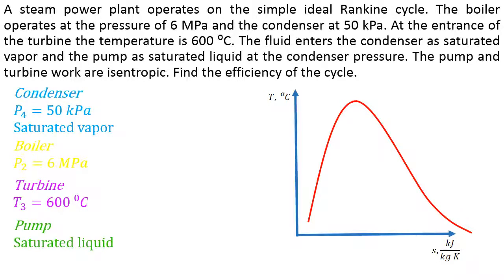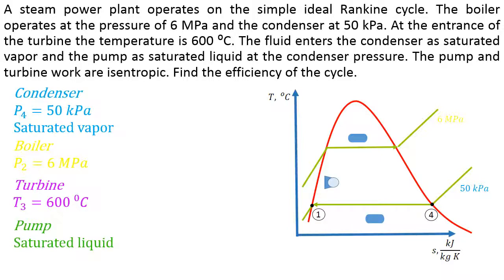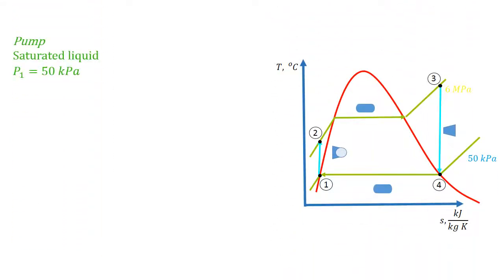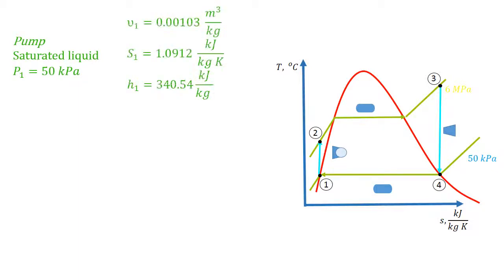Let's start with the condenser. We know that the pressure is 50 kPa and it is saturated vapor. The boiler pressure is 6 MPa. The fluid enters the pump as saturated liquid, and the pump and turbine work are isentropic. As it can be seen, the pressure in the pump is the same as the condenser, and the pressure at the turbine entrance is the same as the boiler. Using the table of saturated water, the values of specific volume, entropy, and enthalpy are the following.